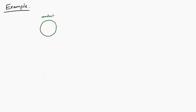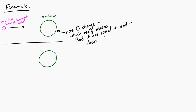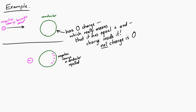Let's say we have a spherical conductor that has zero net charge — meaning equal amounts of positive and negative charge inside it. When we bring a little negative charge near it, the negative charges inside the conductor are repelled by the approaching negative charge and move to the far side of the conductor. That leaves positive charge on the near side, giving us this charge distribution on the conductor.